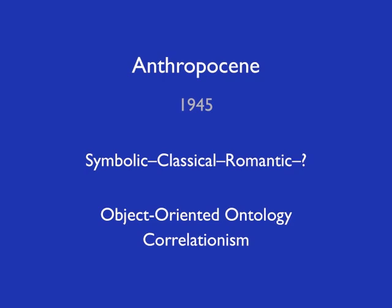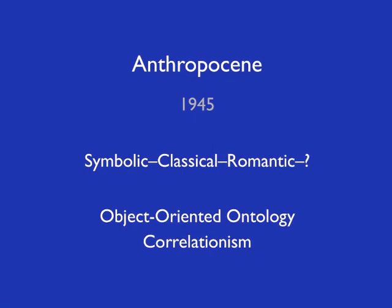The Anthropocene has a very definite beginning: 1945, when a thin layer of radioactive materials was deposited in Earth's crust. The new period we enter, I claim, is an ecological one, which I call the time of hyperobjects. In this period, a new phase of art — unpredicted, and indeed unpredictable by Hegel — comes about. This phase of art I call the asymmetric phase.